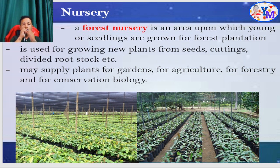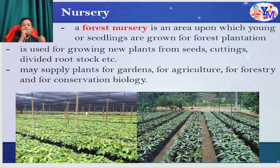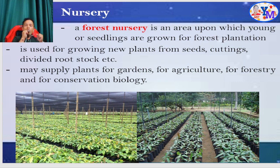Why do we have to control or regulate the temperature, humidity, and carbon dioxide content in a forest nursery? As mentioned earlier, a forest nursery is an area upon which young plants or seedlings are grown for forest plantation, and it is also used for growing new plants from seeds, cuttings, divided rootstocks, etc. We have to control or regulate the temperature, humidity, and carbon dioxide content in a forest nursery to protect young plants and prevent exposure from harsh conditions.